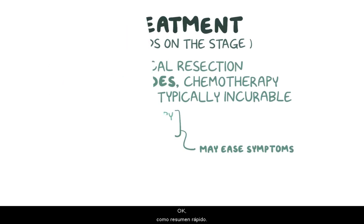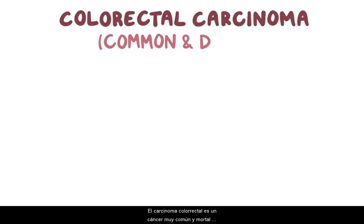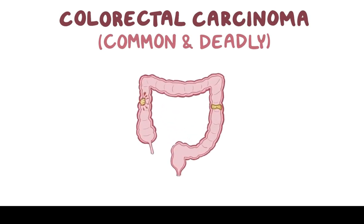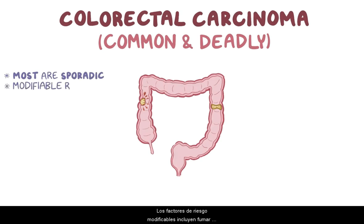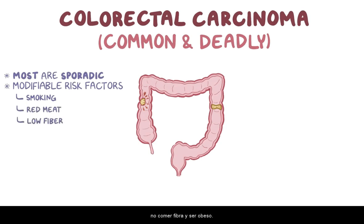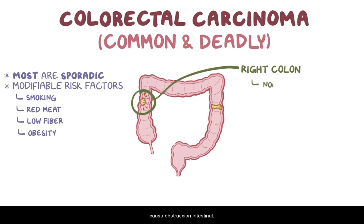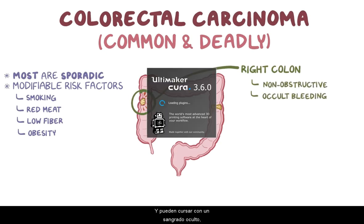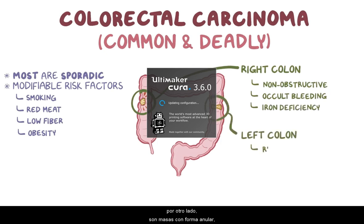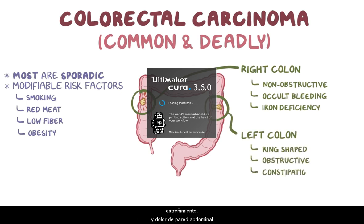As a quick recap, colorectal carcinoma is a very common and deadly cancer that affects the large intestines. The majority of cases are sporadic and do not have a clear cause, but modifiable risk factors include smoking cigarettes, eating a lot of red meat, not eating a lot of fiber, and being obese. Symptoms can vary based on the tumor's size and location. Tumors of the right colon generally don't cause bowel obstruction, and instead can cause occult bleeding, which can lead to iron deficiency anemia. Tumors of the left colon, on the other hand, are generally ring-shaped masses, which can cause bowel obstruction with constipation as well as abdominal pain.